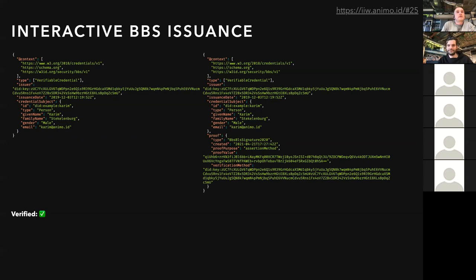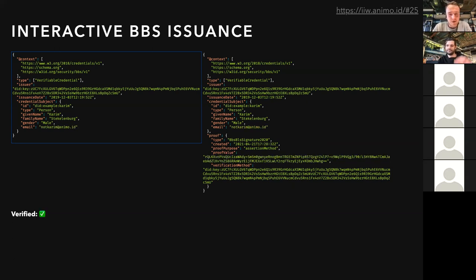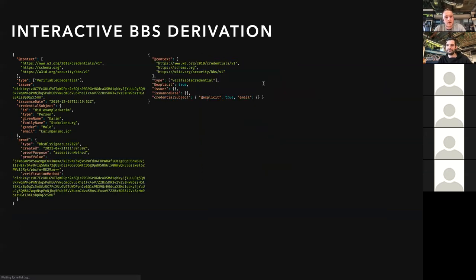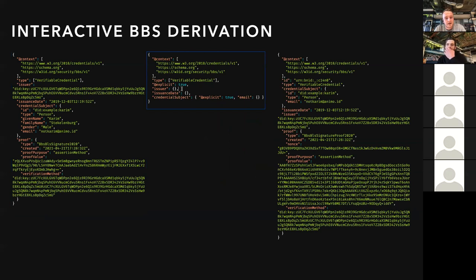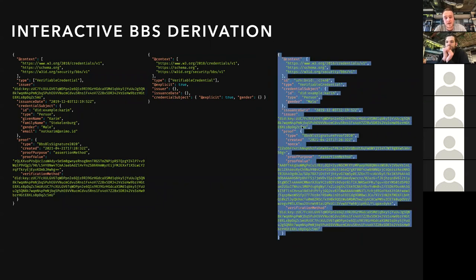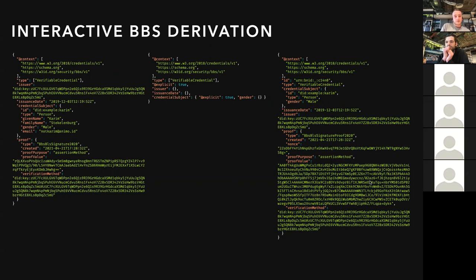If you go to this URL on slide 25, here's the credential as we just issued it. I can live-update it and it will in real time create a new credential and also verify it. This is the interactive derivation demo — the credential we just issued in the previous slides. Using a JSON-LD frame, I can say I don't want to disclose the email, I just want to have the gender. Using this object, it will in real time create the BBS derived credential. This is actual running code and you can verify it in other agents.